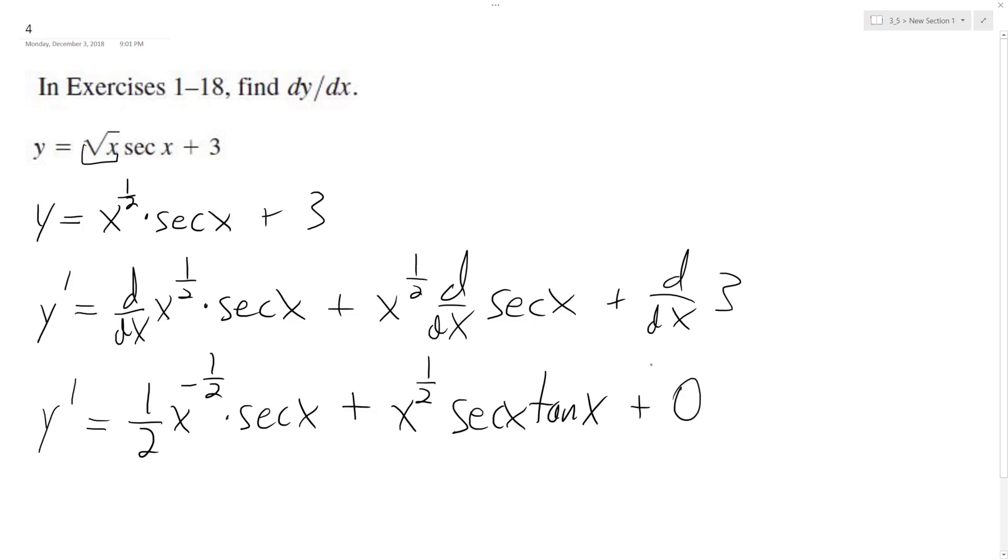So depending on how you want to do this, y prime or dy/dx is equal to 1 half or 1 over 2x raised to the 1 half, or you could rewrite it as square root of x times the secant x plus x raised to the 1 half. Well, I'll just keep it consistent. Square root of x and then secant x tangent x.